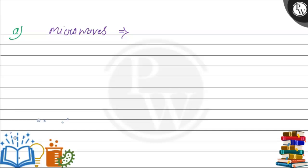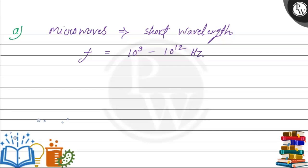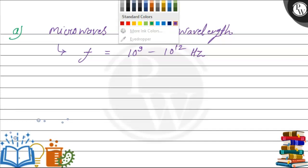Microwaves are ideal for radar systems because they have short wavelength. Due to the short wavelength, they are ideal for aircraft navigation radar. Now, regarding the frequency: if we represent frequency as f, the frequency of microwaves ranges from 10⁹ Hz to 10¹² Hz. This is the frequency range — that is the answer to Part A.